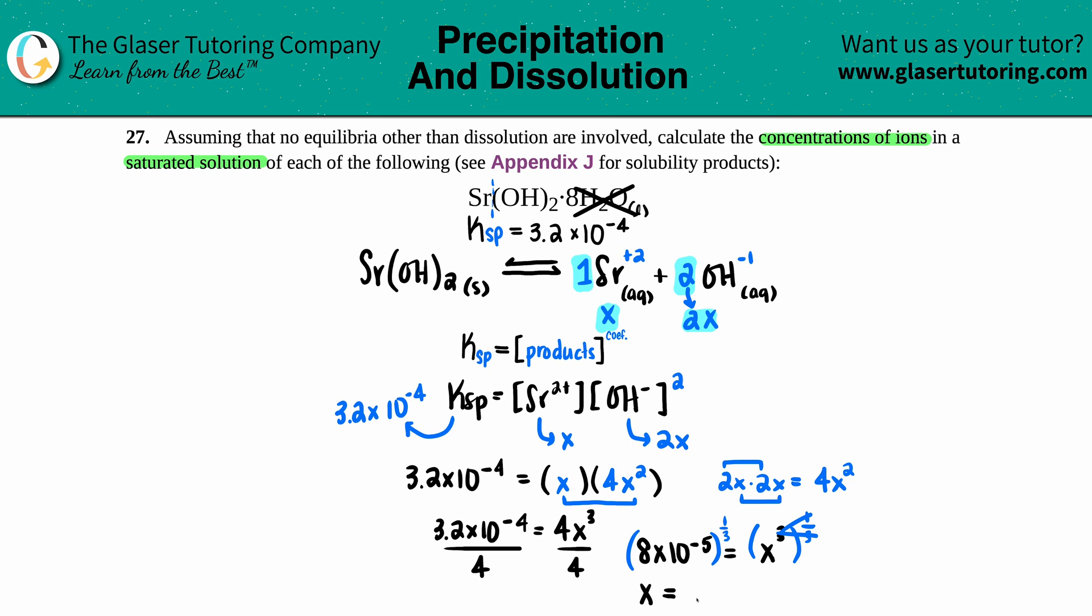4.3 times 10 to the negative second, and that's molarity. But now they just wanted to find out those concentrations of the ions. The two ions are the two charges. So we have strontium Sr—we said that that was just x, and x was equal to 4.3 times 10 to the negative second molarity.